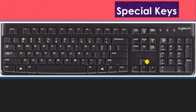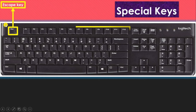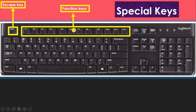Our first topic is special keys — special keys have a special purpose for doing any task. First one is the Escape key. The name of this key is Escape, written as ESC on the key. Next one is the function key. Function keys are F1 to F12, so there are a total of 12 keys considered as function keys.